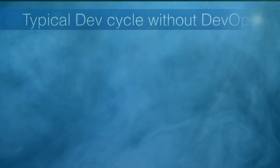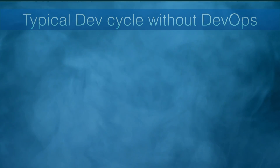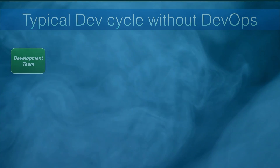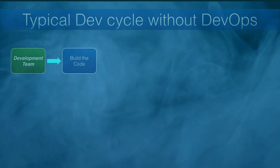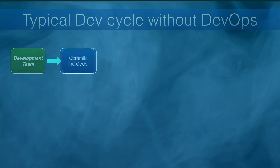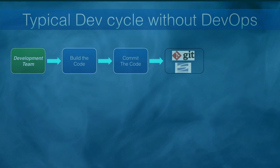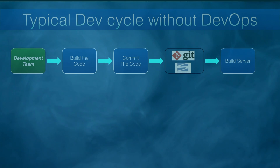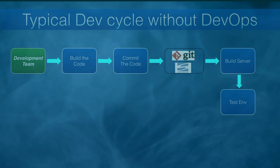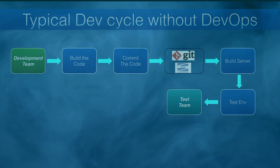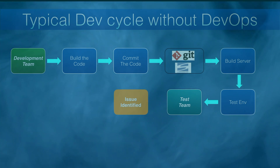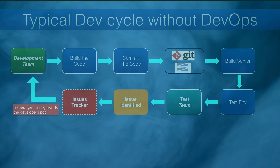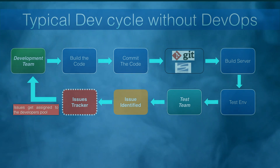Before we get into DevOps and its best practices, let's quickly cover the typical development cycle without DevOps. In that scenario, the development team gets the requirement details, sets up the development environment, and starts building the code. After building, the developer commits the code to the version control repository. From that repository, code is manually pulled by the build server for a specific build. The build is created for the test environment and pushed to the test server. Once the build is deployed, the test team accesses the application and does a round of quality assurance checks. If any issues are identified, they are entered in the issue tracker, from which issues are assigned to the available development resource pool to fix them.